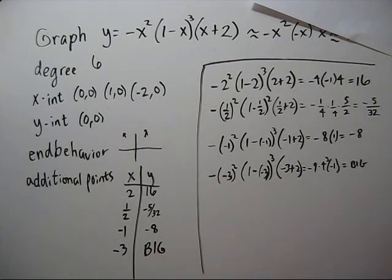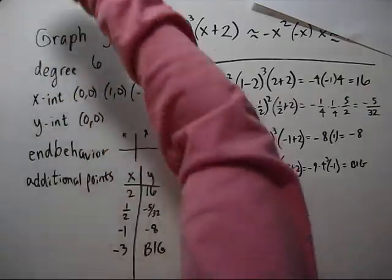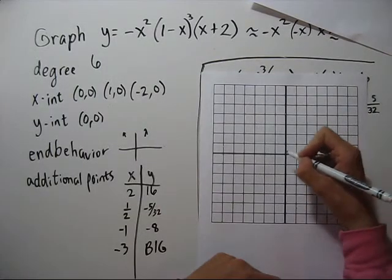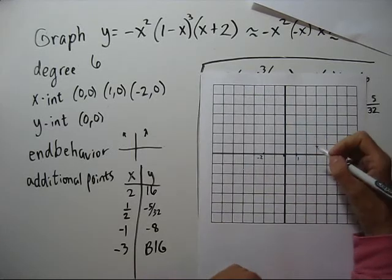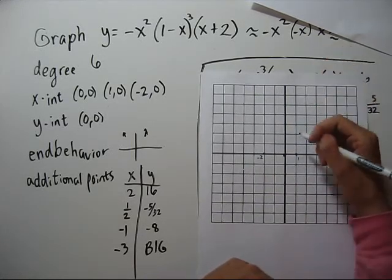So let's make a final draft. Have our intercepts again. Two is clear up at sixteen. So that just tells us it's really steep.